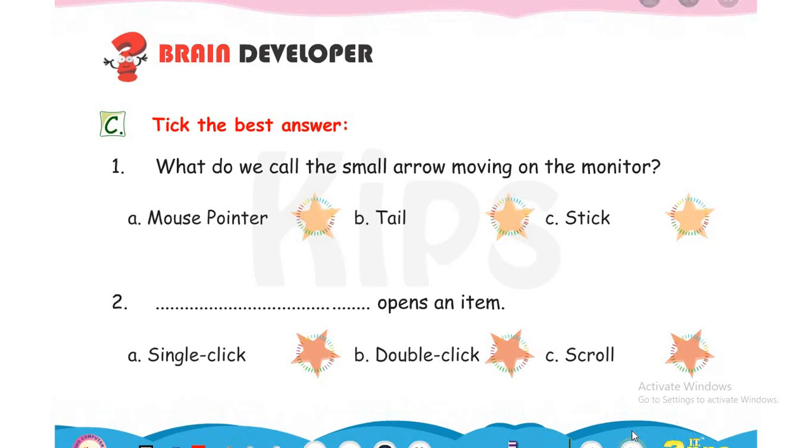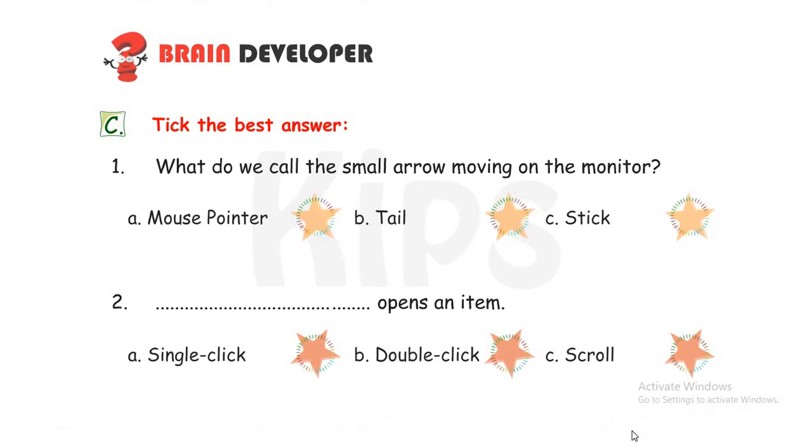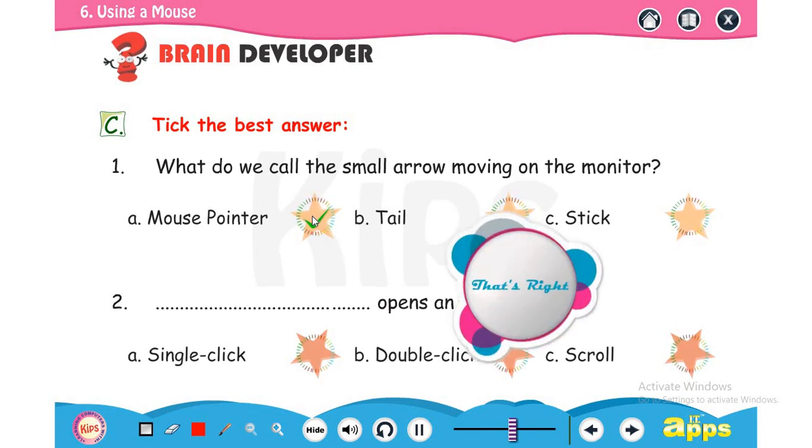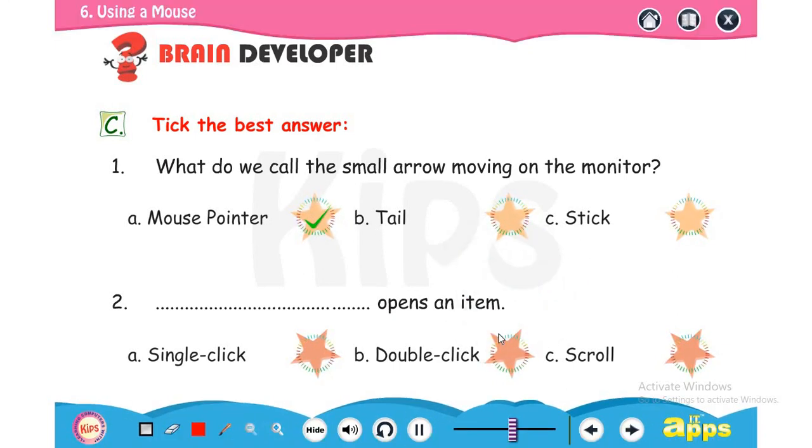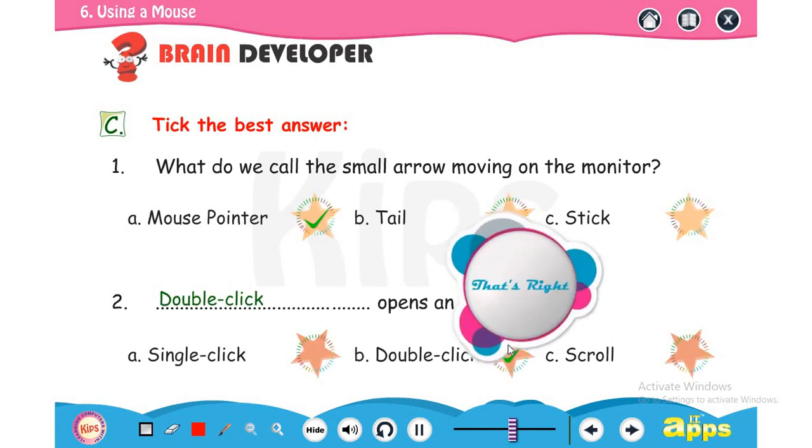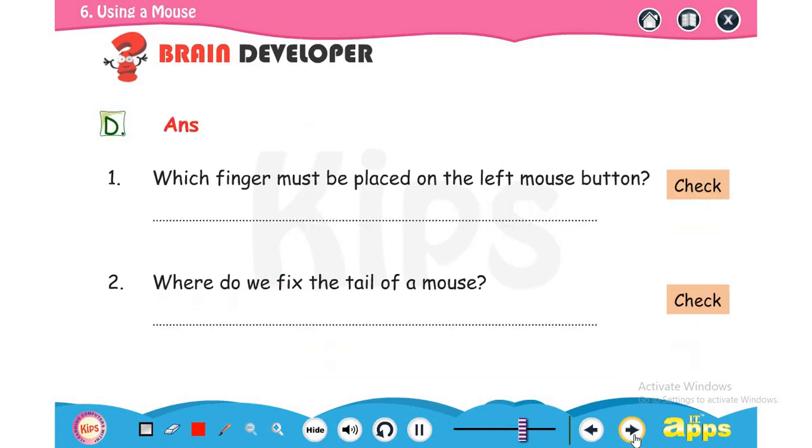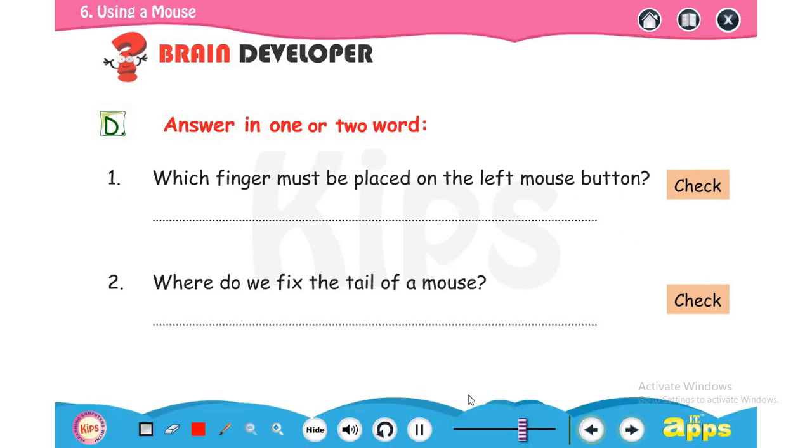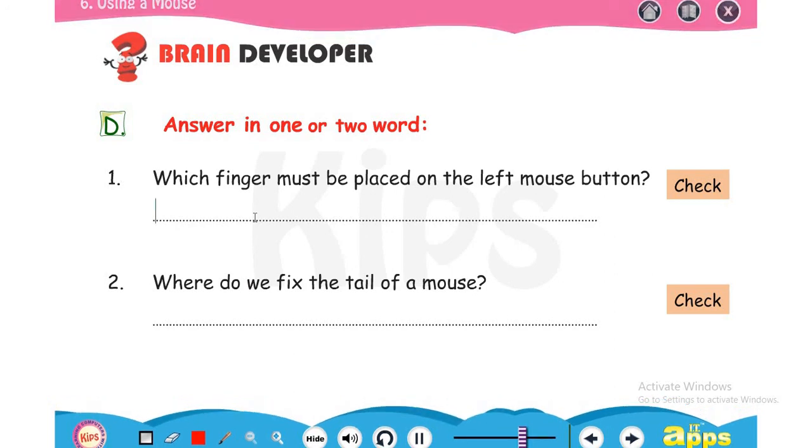Take the best answer. See the question. What do we call the small arrow moving on the monitor? Called as a mouse pointer. That's open an item. With the help of double click we can open an item. Answer in one word. Which finger must be placed on the left mouse button? We always place the left index finger on a left mouse button.